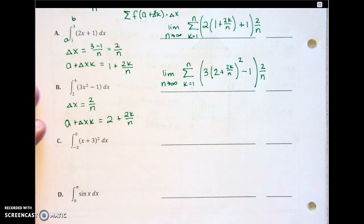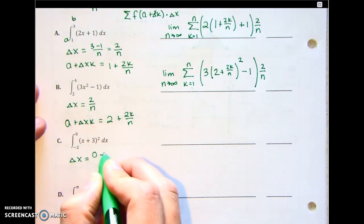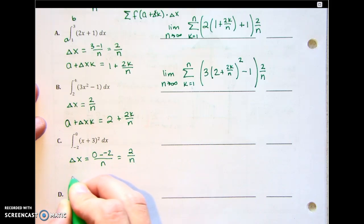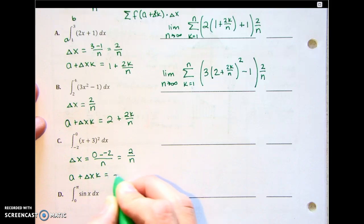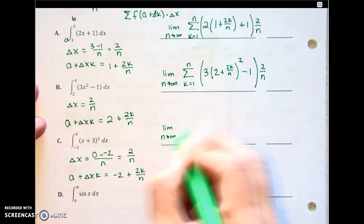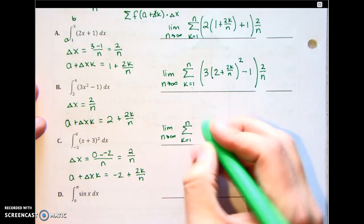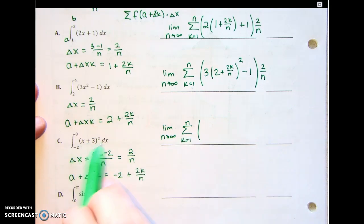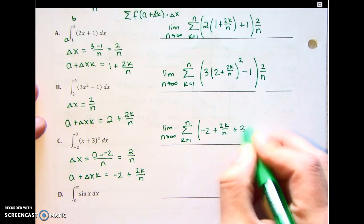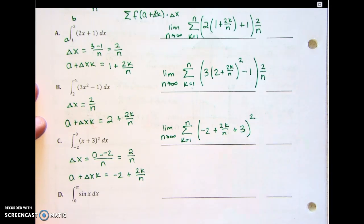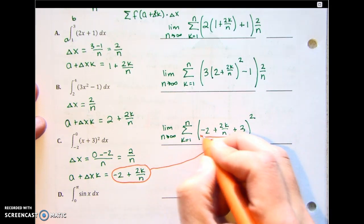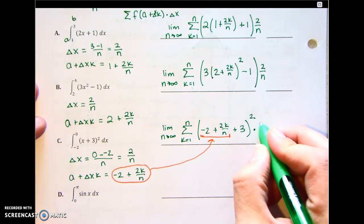For example c: 0 minus negative 2 is positive 2 — don't think that it's negative 2. So delta x is 2 over n. And a plus delta x k equals negative 2 plus 2k over n. Building it: limit as n goes to infinity, sigma k equals 1 to n of (negative 2 plus 2k over n) plus 3, all squared, times delta x which is 2 over n.